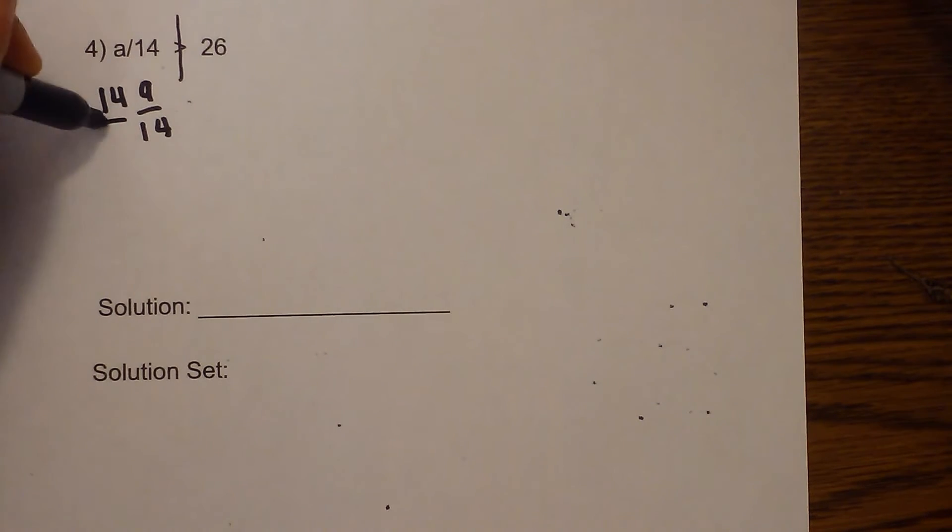So to do the opposite, we need to multiply because you can think of this as a over 14 multiplied by 14 over 1. The 14s will cancel. I will draw a dot for multiplication.